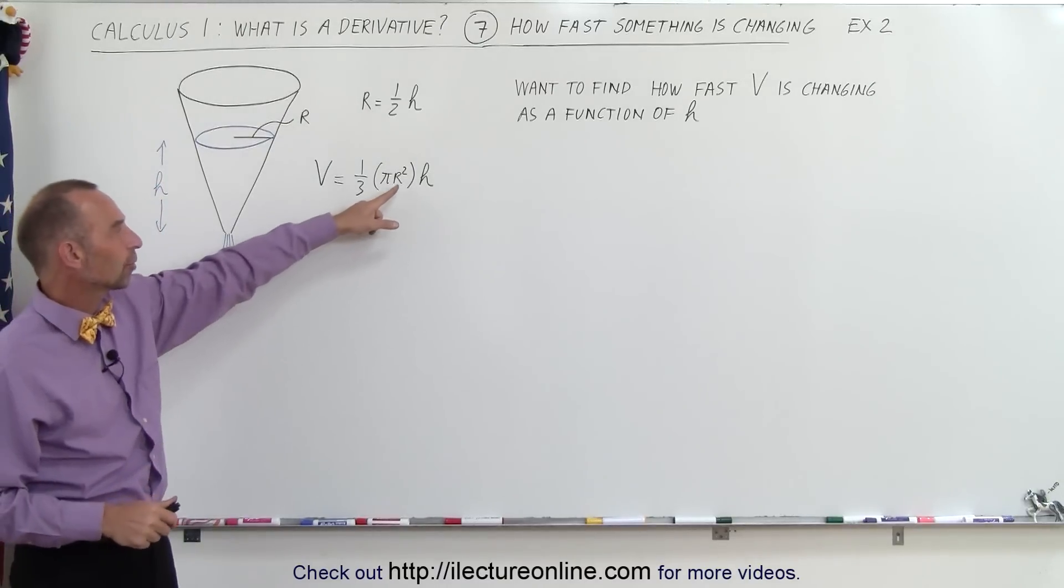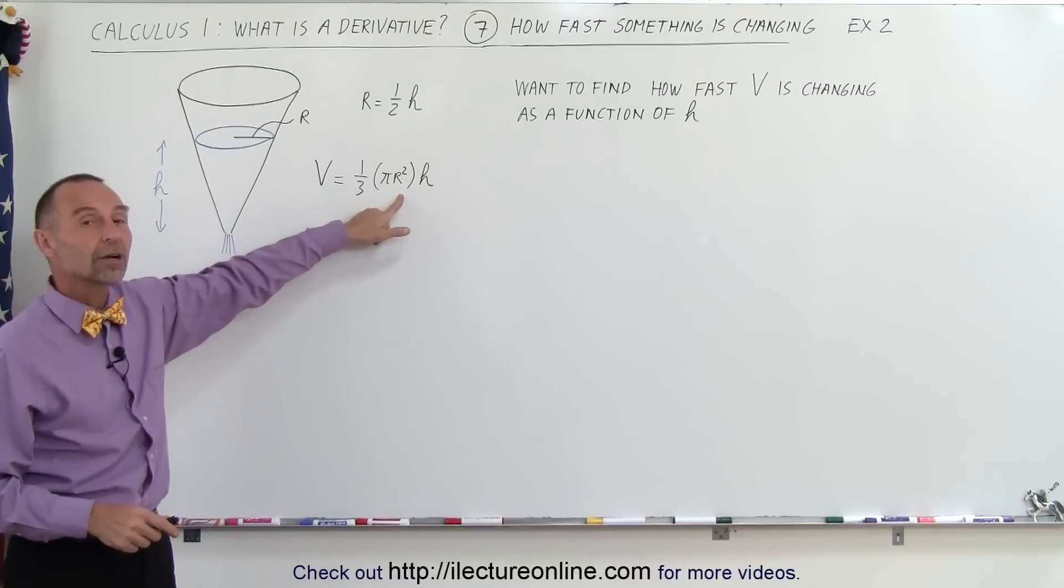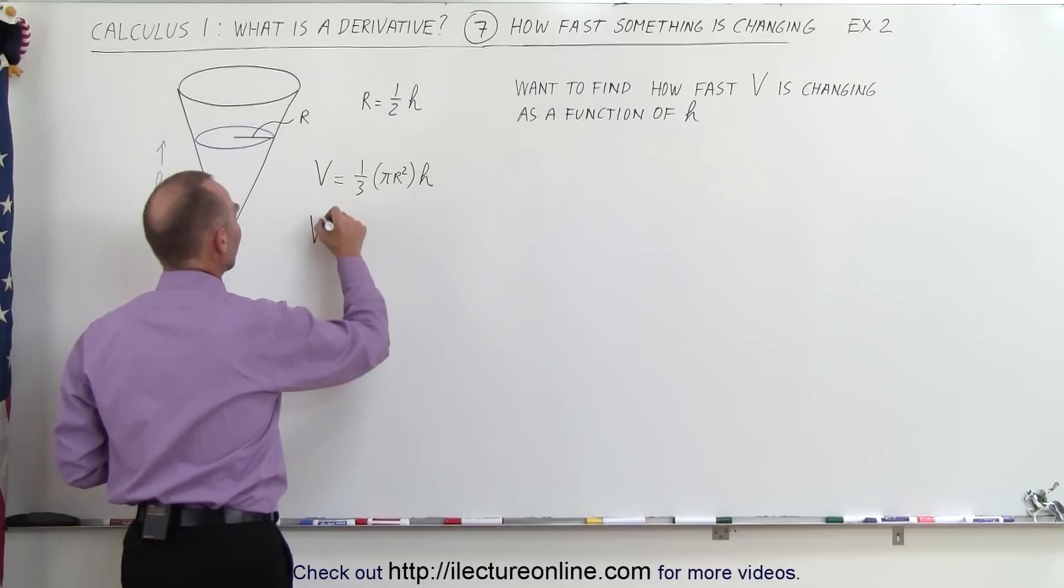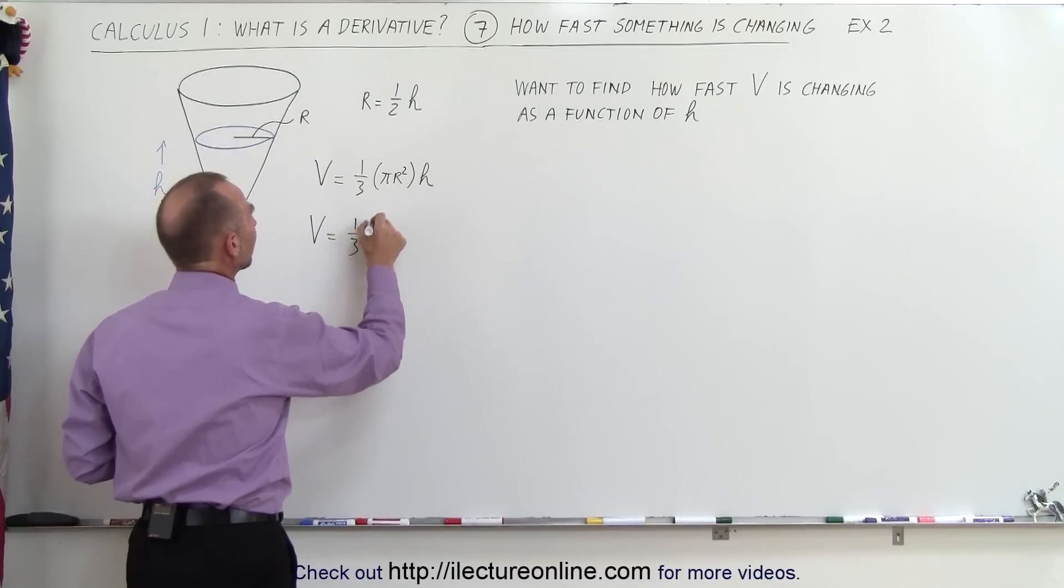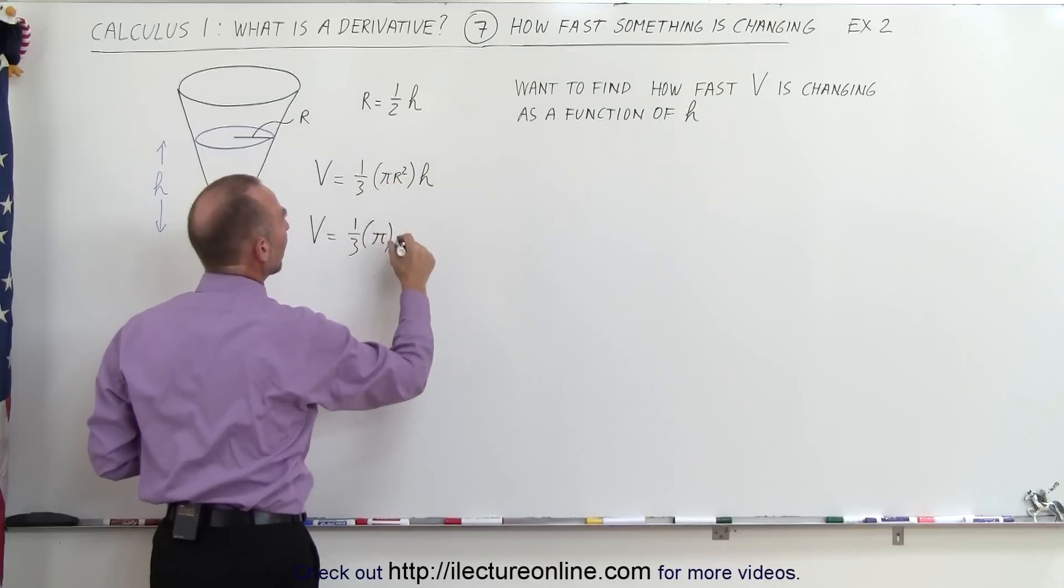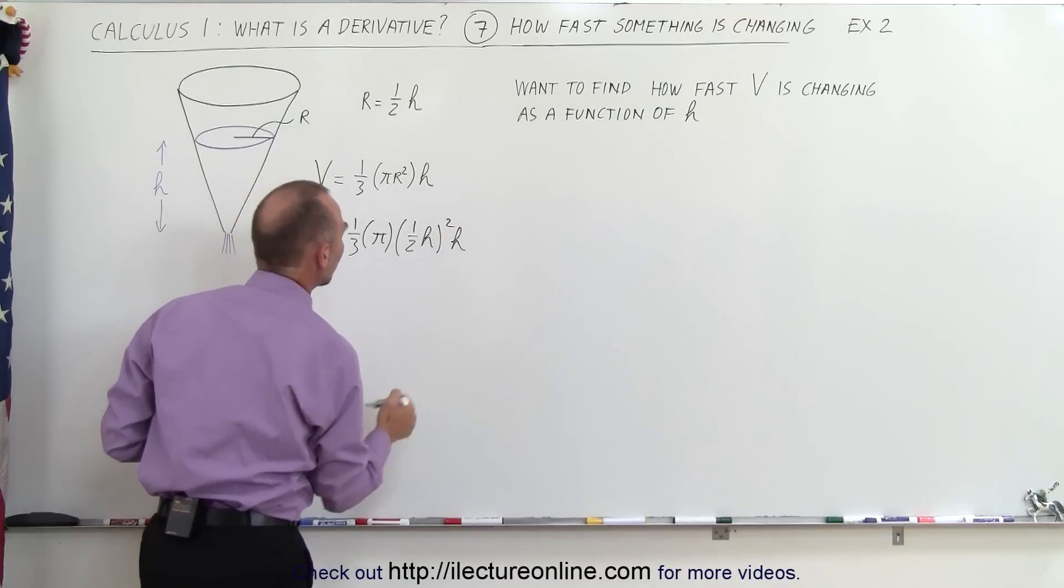However, notice we have two variables. We have an r and an h in there. That means we first want to get rid of the r, replace it by an h. So we can rewrite the equation. V is equal to one-third times π times r squared, and r is one-half h. That would be one-half h quantity squared times h.